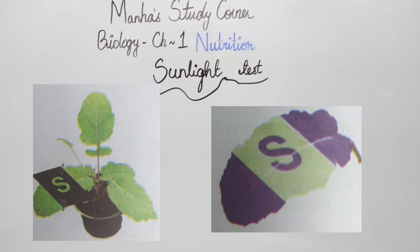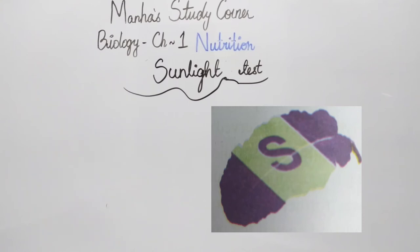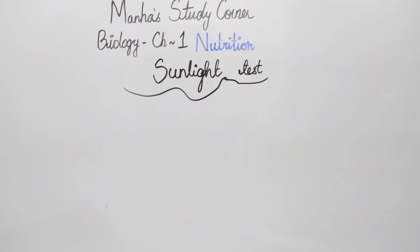Results are going to be quite interesting here. What you will observe is that only the parts of the leaf that were exposed to sunlight test positively for starch, whereas the parts of the leaf that were covered have just turned pale, indicating no starch whatsoever is produced in absence of sunlight.